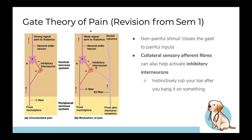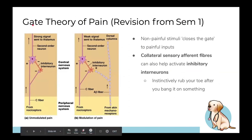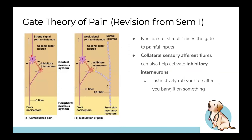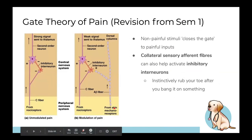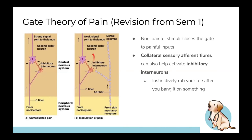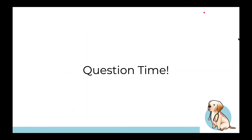The gate control theory of pain states that stimulating nearby areas — such as mechanoreceptors in the skin — closes the gate to painful inputs and reduces pain experience. A C-fiber carries pain upward; stimulating a nearby mechanoreceptor promotes the inhibitory interneuron to release enkephalins, inhibiting the second-order neuron and sending a weaker signal to the thalamus.